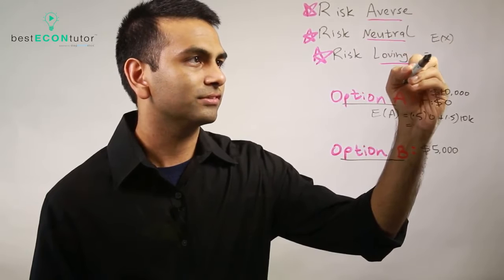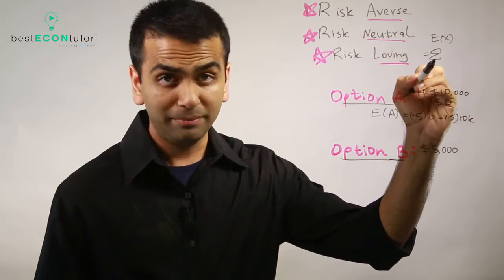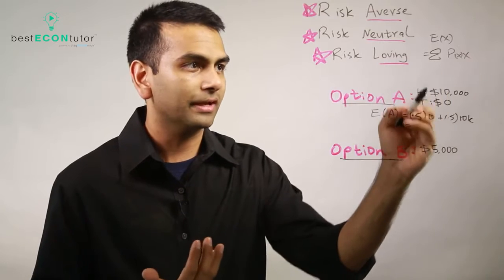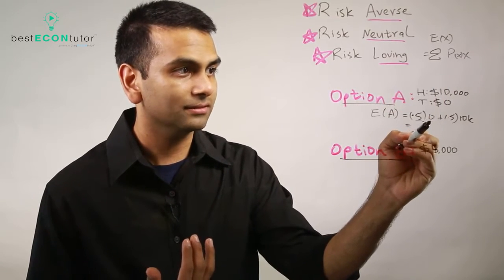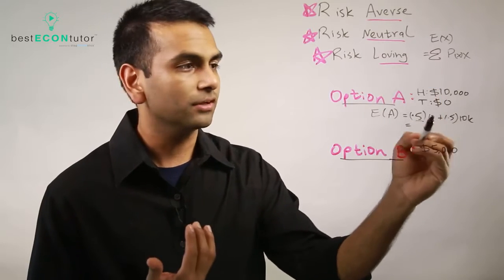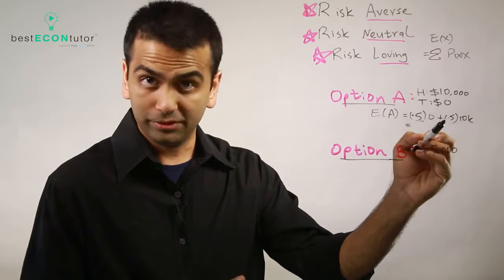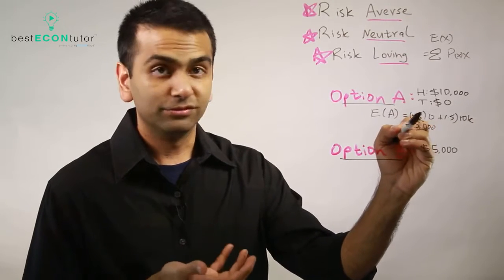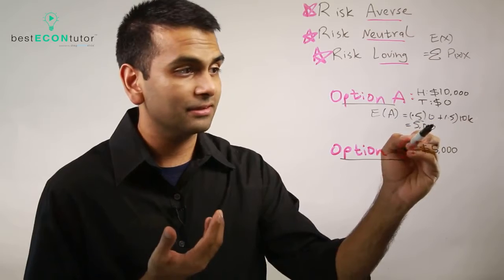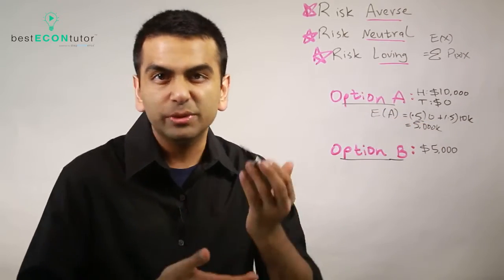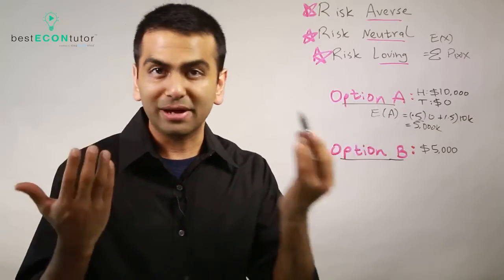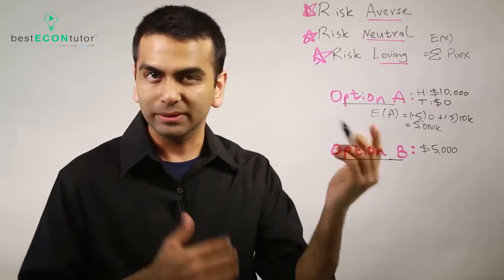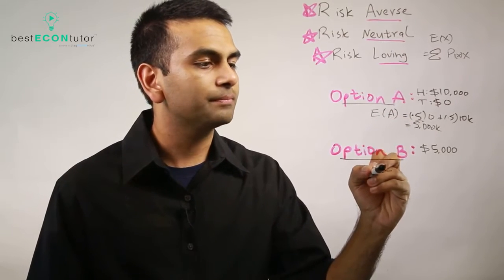The formula for the expected value of X is the sum of P(X) times X. So you average it: fifty percent — that's the P(X) — times the amount you get (zero), plus fifty percent times how much you get in the other case. Here with two outcomes: 0.5 times zero plus 0.5 times ten thousand equals five thousand.